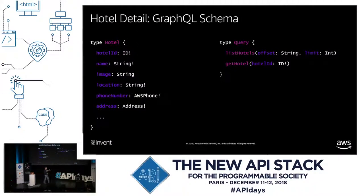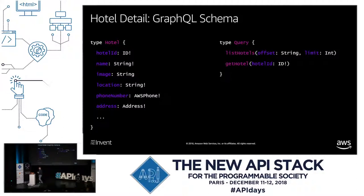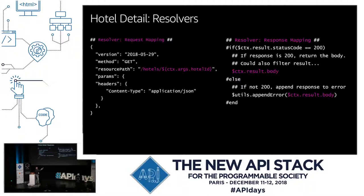I will create two queries: one to get the list of all hotels available in my backend, and one to get the specific details for a hotel. The first returns an array of hotels, the second returns just one hotel. My data source is the existing REST API. The next step is to create the resolver — mapping the JSON from the existing REST API to the GraphQL engine. The request mapping specifies the method as GET and the resource path as /hotel/{hotelId}. On the reply side, I verify the status code is 200, and if so, I pass the body of the response back to the GraphQL server. The field-level filtering is done by the GraphQL server.